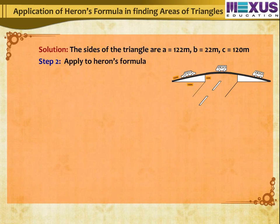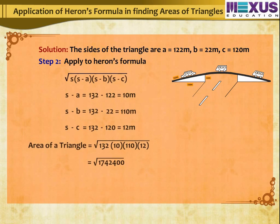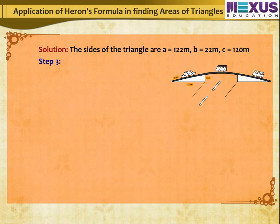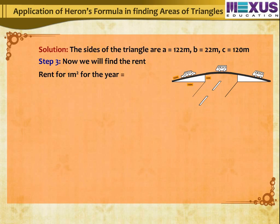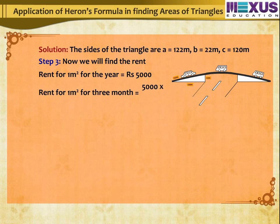Step 2: Applying Heron's Formula, we get the area of the triangle equals 1,320 m². Step 3: Find the rent. Rent for 1 m² per year = Rs. 5,000. Rent for 1 m² for 3 months = 5,000 × 3 ÷ 12 = Rs. 1,250.